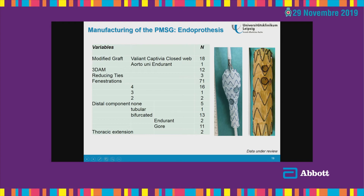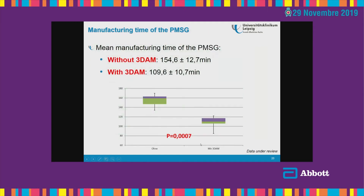We also use reducing ties — very important for manipulating the graft in the aorta and ensuring accurate positioning. The grafts we used were mostly Valiant Captivia closed web, but we also used an Endurant Unileg. We created 71 fenestrations in our cohort and used a distal component in 14 cases — two Endurant, 11 Gore grafts, and thoracic extensions in two thoracoabdominal type 3 cases. Comparing manufacturing time: 144 minutes without the 3D aortic model versus 109 minutes with it — almost 35 minutes of reduction, which is tremendous for these patients.